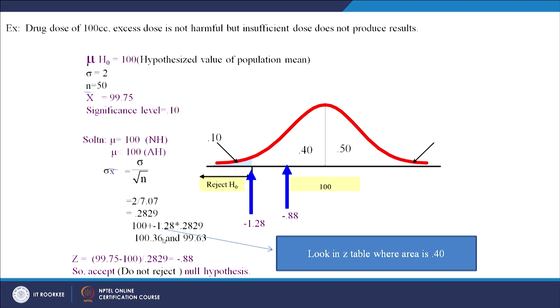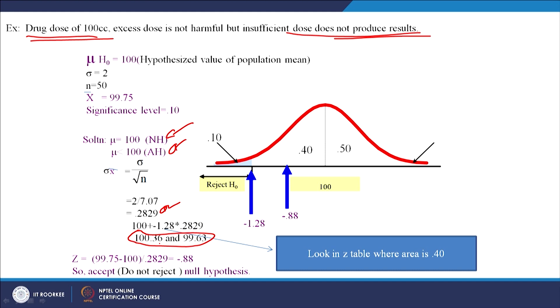Let us look at one more example. Let us say you have to give a dose to a patient. If excess dose is given it is not harmful, but if less quantity is given then it would not produce sufficient results. So this is how you frame the null and alternative hypothesis. You calculate standard error first, then lower and upper limits. Z is minus 0.88, and since this is a one-tail test you will have just one Z value.